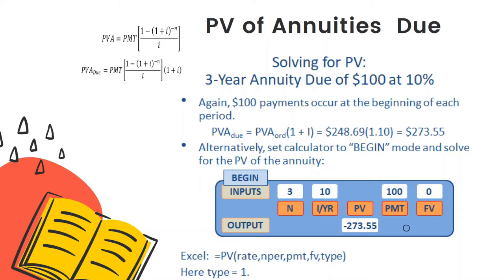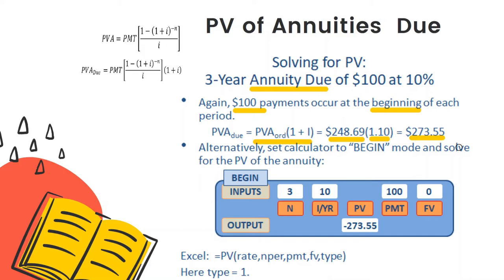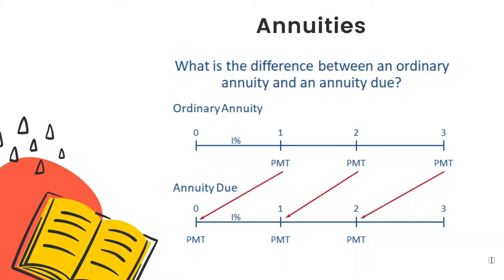So given a choice between 248 dollars today and 100 dollars at the end of each year over the next three years, you should feel no difference, because the stream of 100 dollar cash flows occurring at the end of each year over three years has a present value equal to 248 dollars. Different textbooks may use different notation — r for interest rate and p or a for the constant cash flow — but the formula is equivalent.